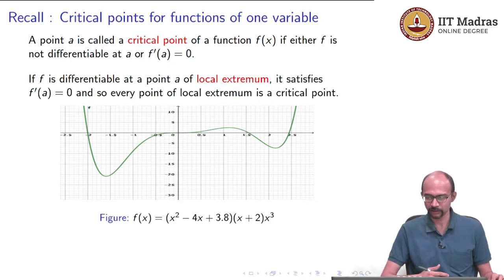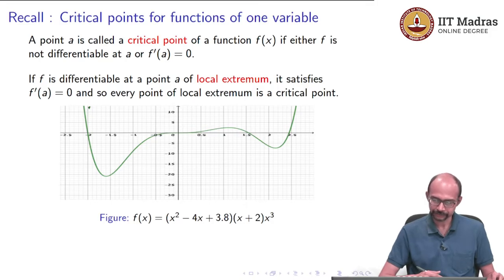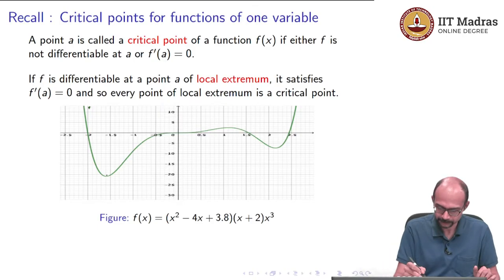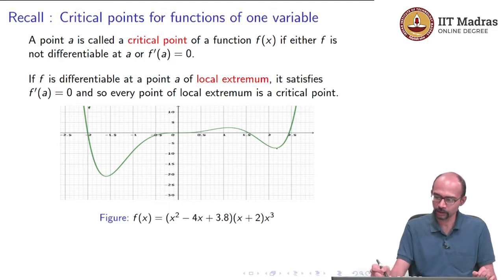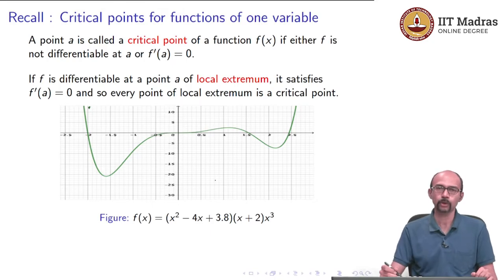Here is an example — we have seen this picture before. In this picture we have several points of local extremum. For example, there is a point close to minus 1.5, and a point close to 2; both are local minima. Then there is a point between 1 and 1.5 which is a local maximum.